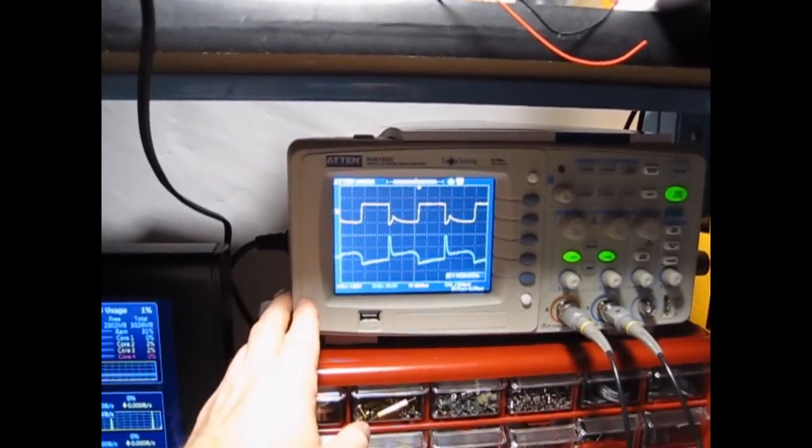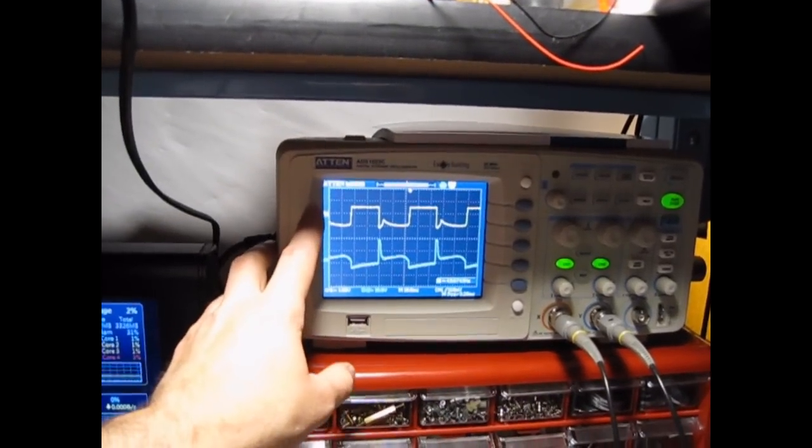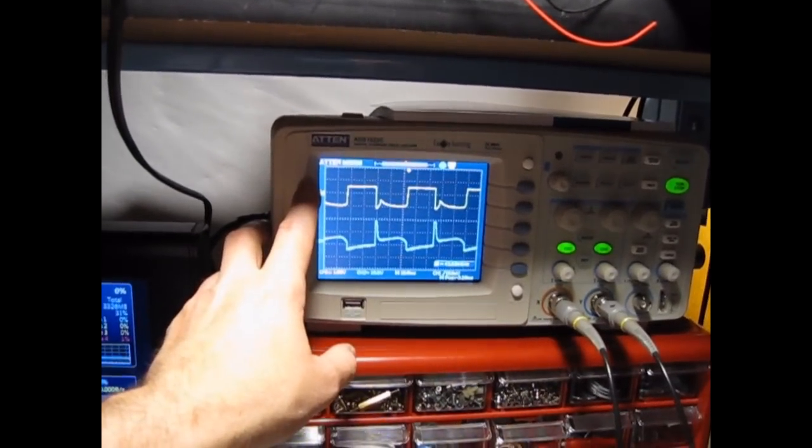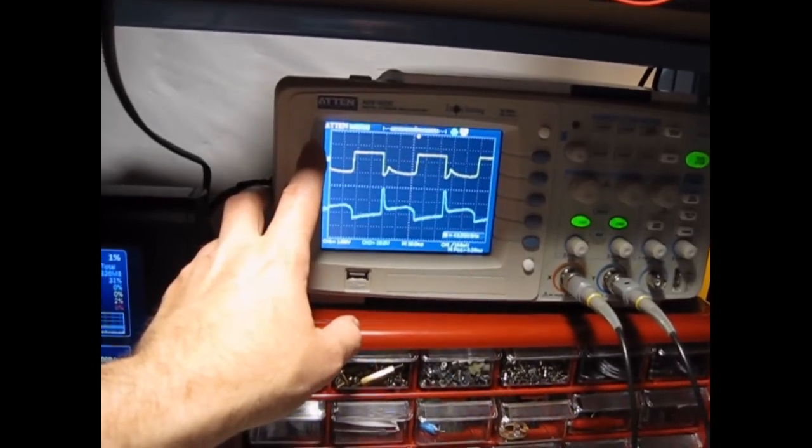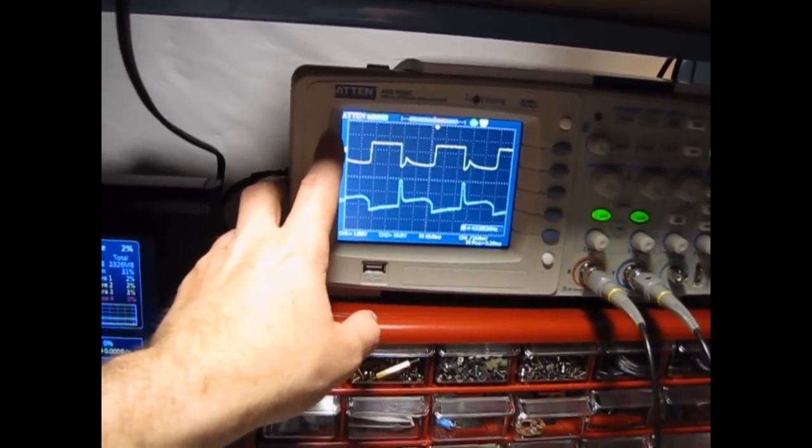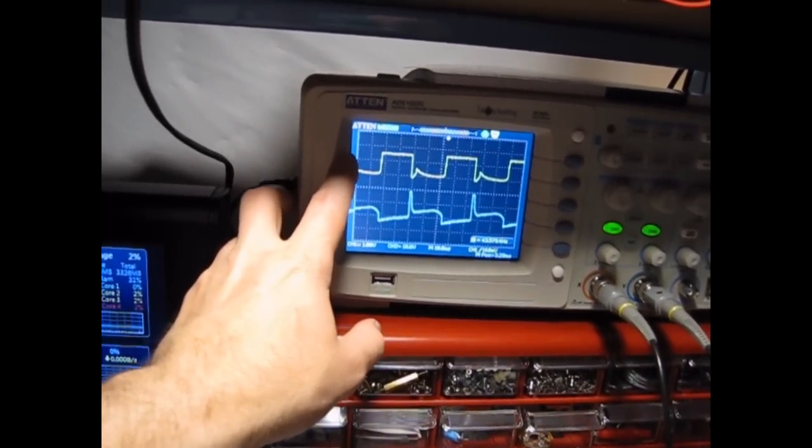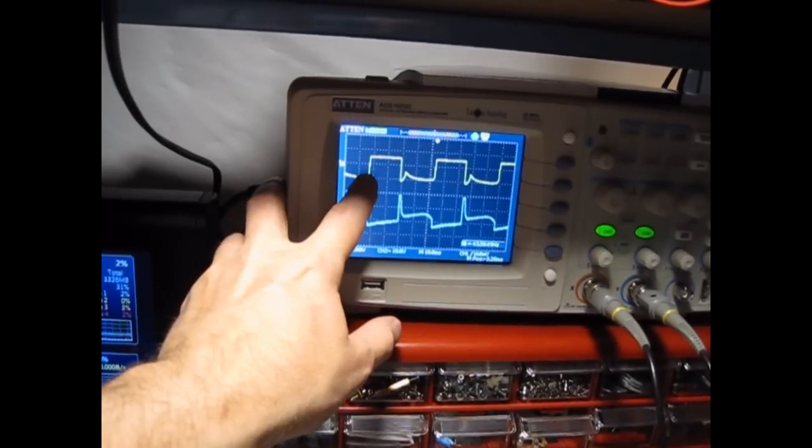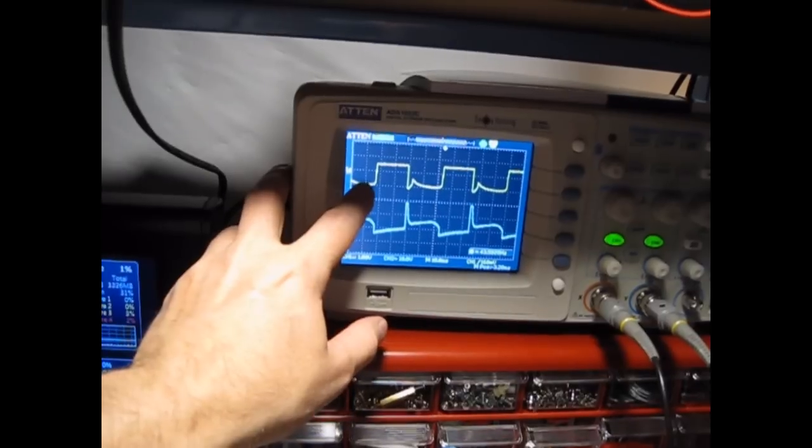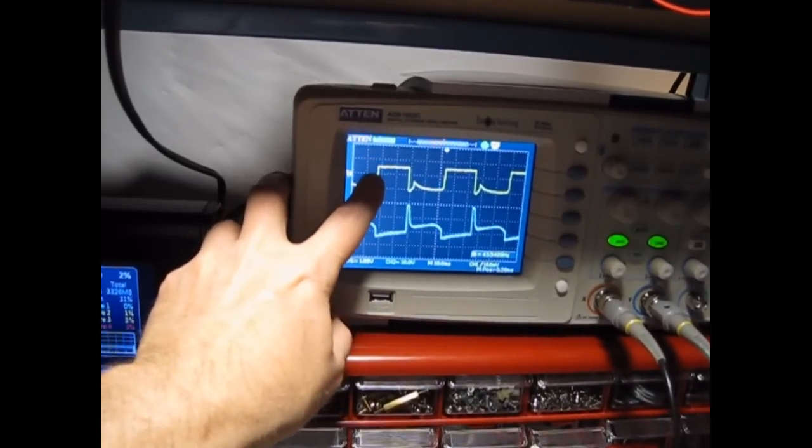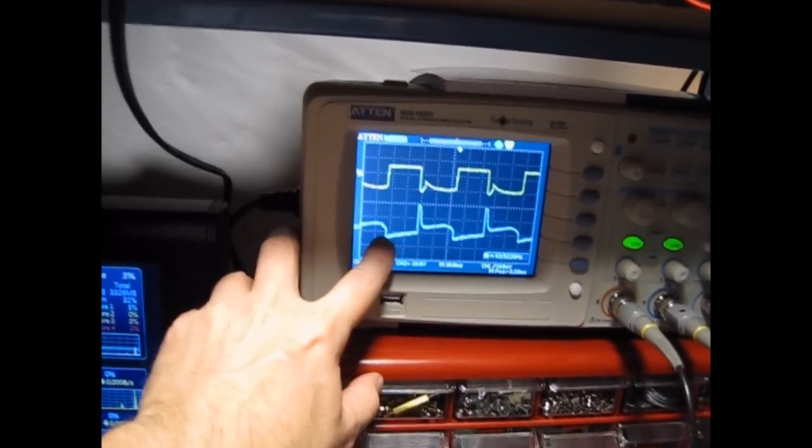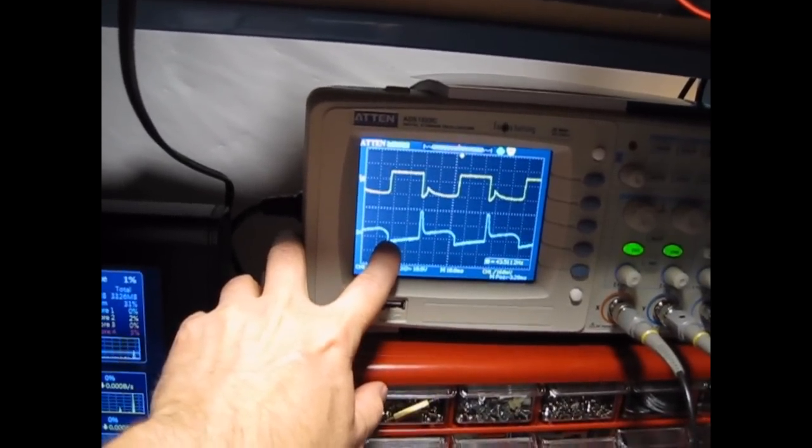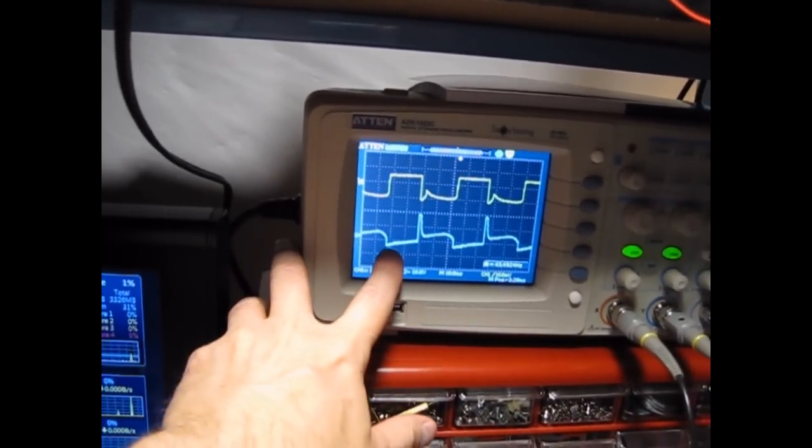I guess that's good enough. Channel 1 signal here is off the base of the 2N3055 transistor that's coming off the trigger coil. And you can see when it turns on, that's when it dumps the back EMF into the charge battery.